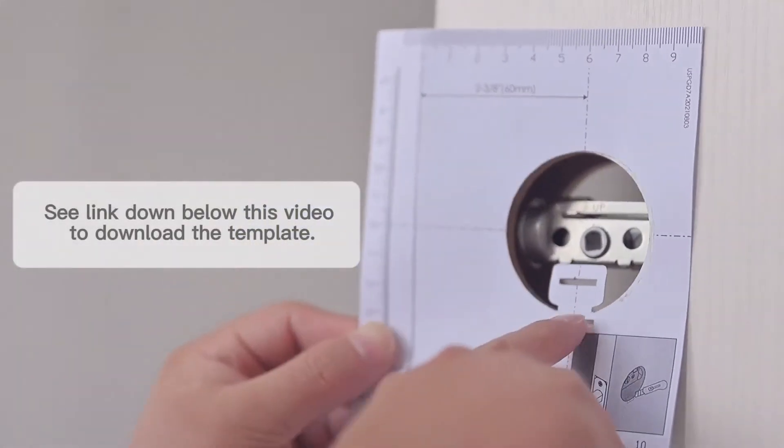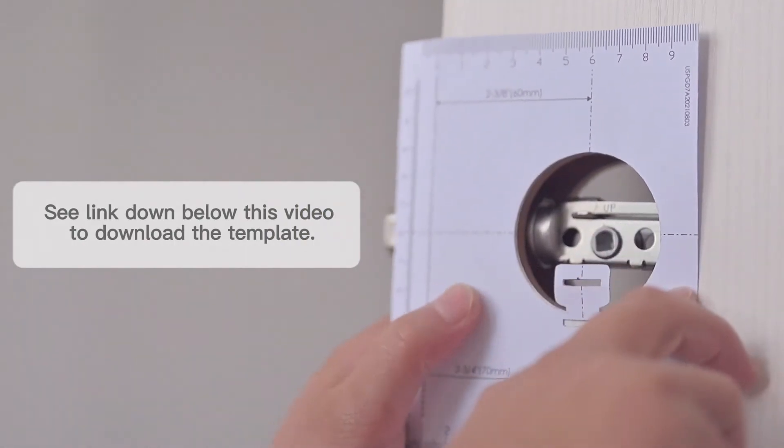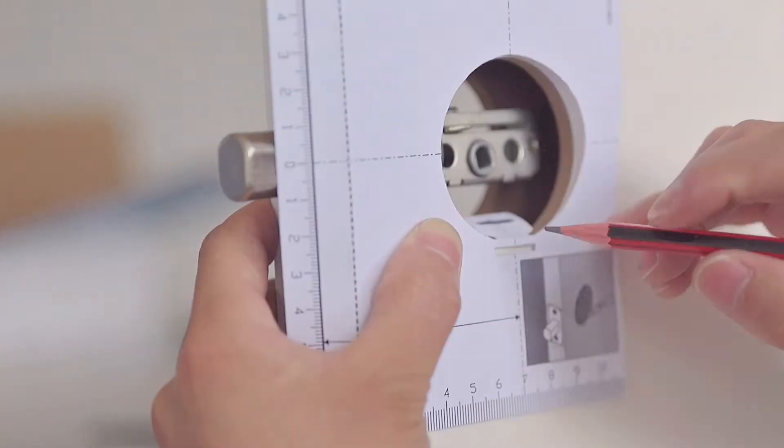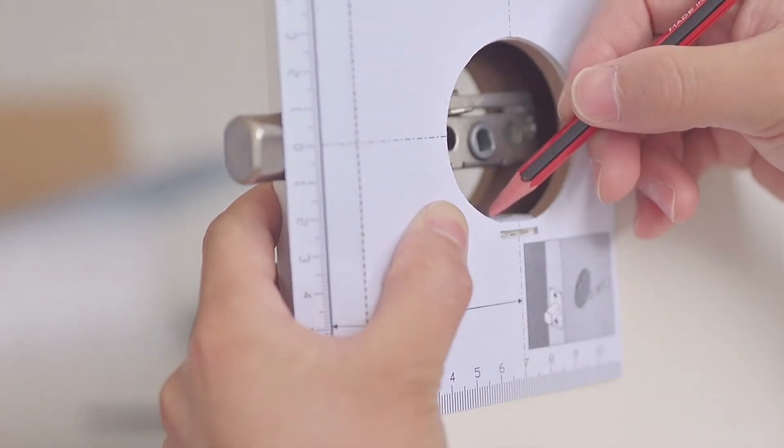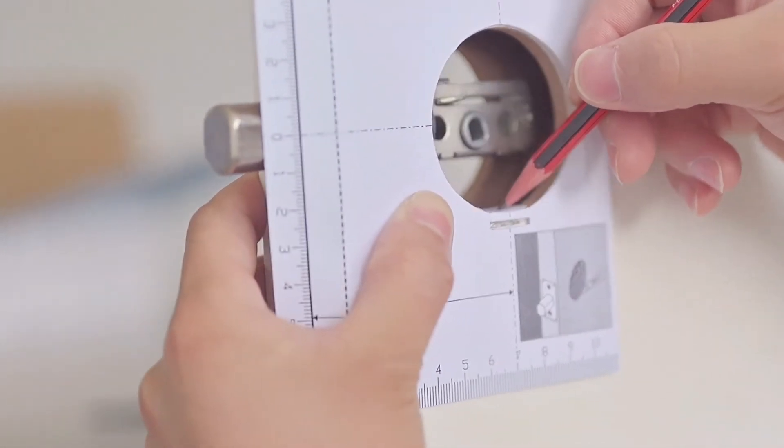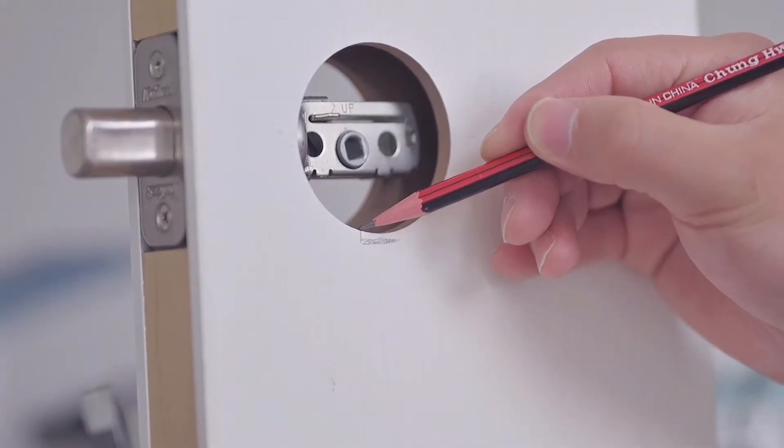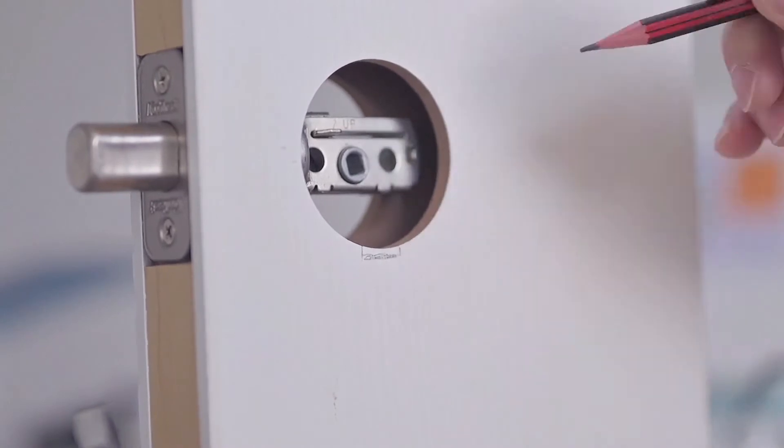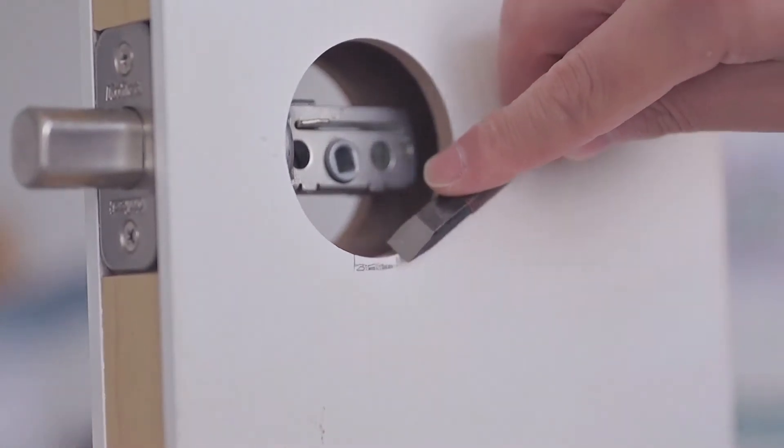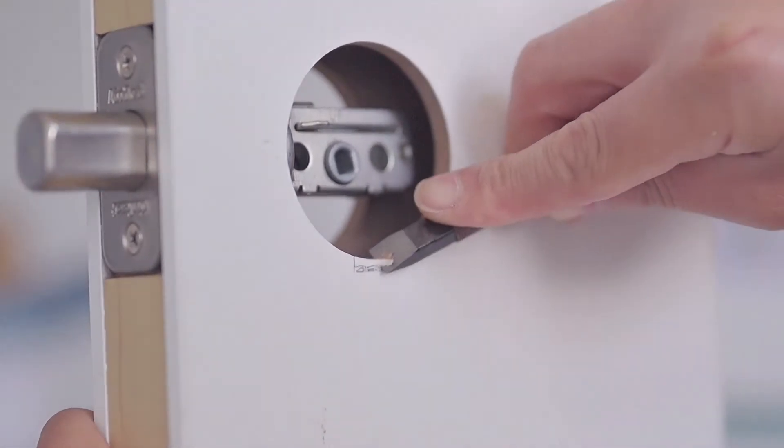Align the template to door hole. Fold the paper hole marker inside the door hole. Mark the hole on the door surface and inside the door hole. Connect the two marked areas to be trimmed. Use a wood file or utility knife to trim and modify the door hole.